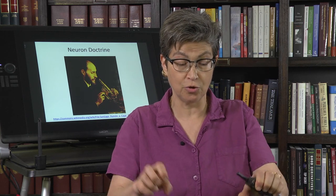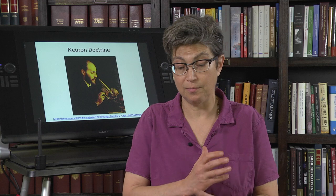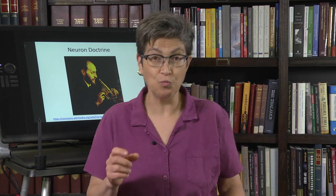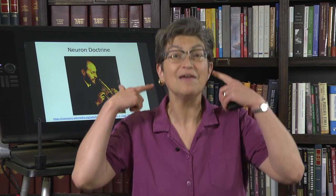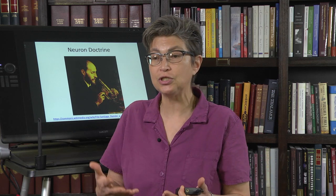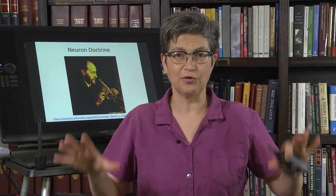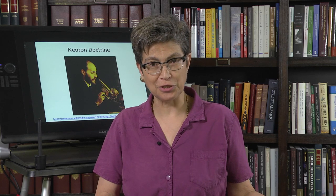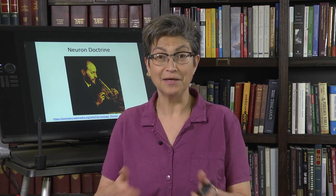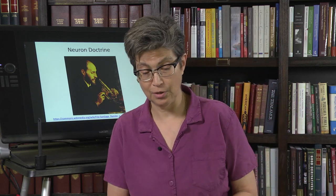Ramón y Cajal used Golgi's technique to intuit that neurons in both the central and peripheral nervous systems are distinct entities — that one neuron is distinct from another. Amazingly, he used only a 19th-century light microscope, with which he could not actually see the distinction between cells. He saw it in his mind; he intuited it. Both Cajal and Golgi won the Nobel Prize, though Golgi still argued incorrectly that the nervous system was a syncytium.